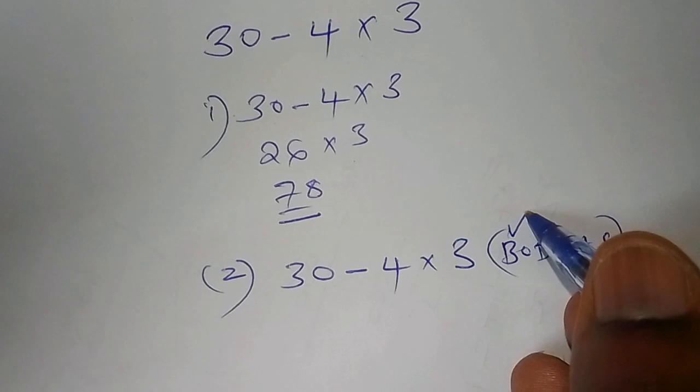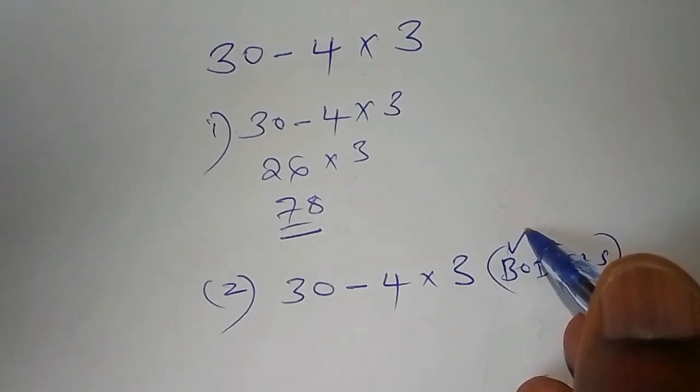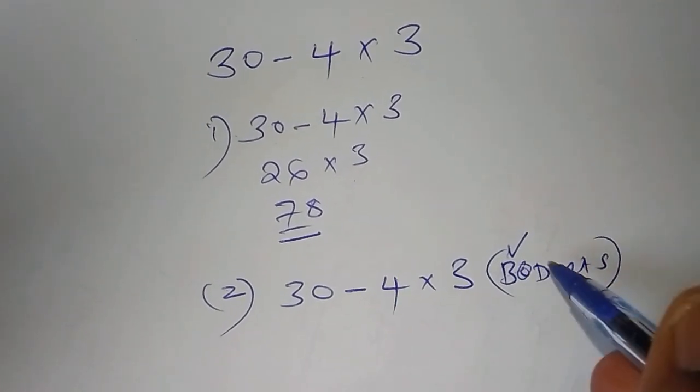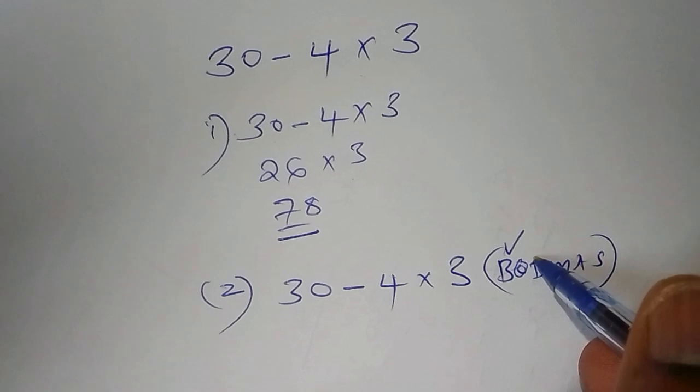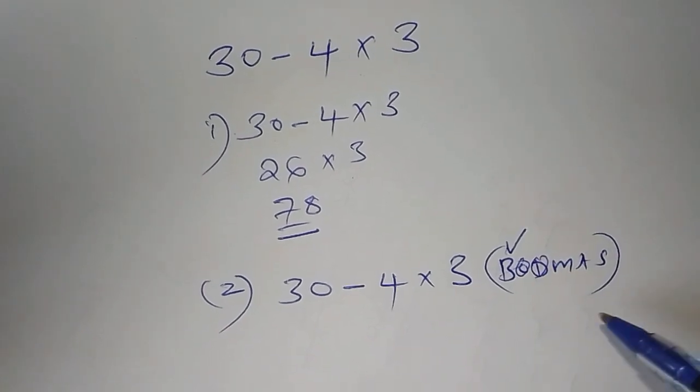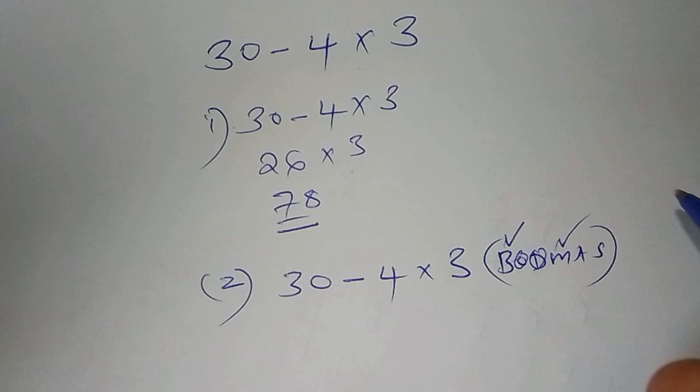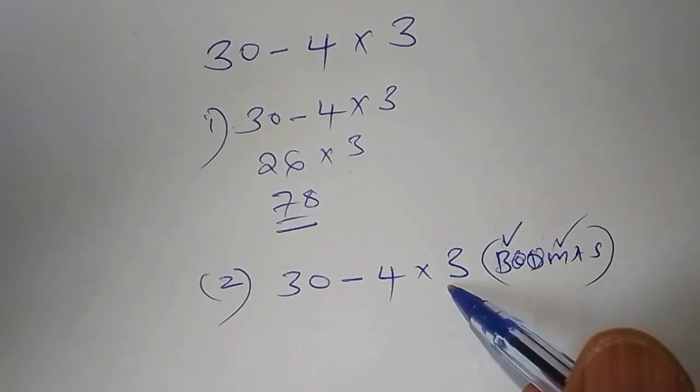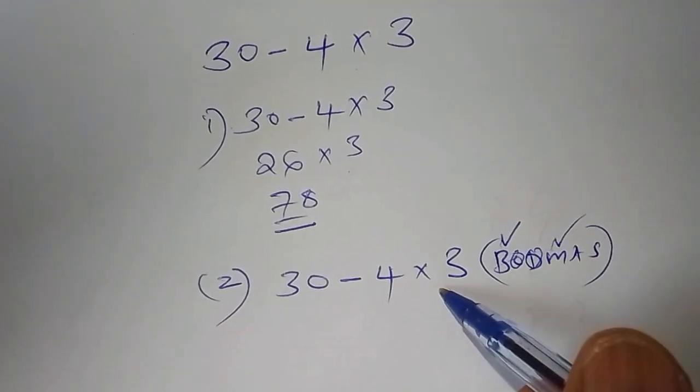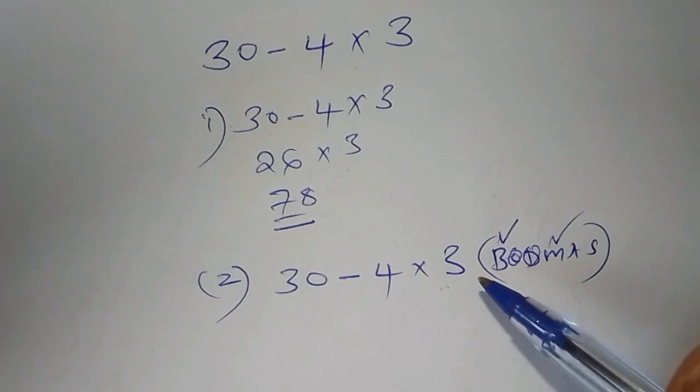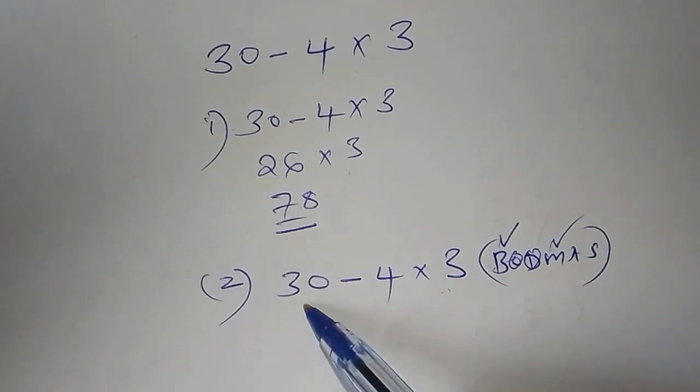Now, B stands for bracket. There is no bracket in that mathematical concept. O stands for of. There is no any of. D stands for division. There is no any sign for division. Then M stands for multiplication. Then there is multiplication here. So we have to work out the multiplication first. You don't have to rush in working out 30 subtract from 4.